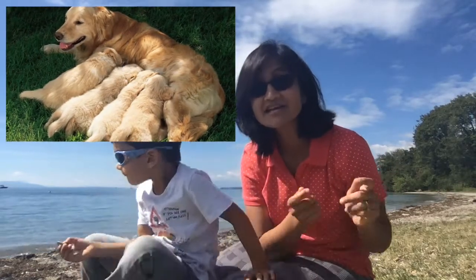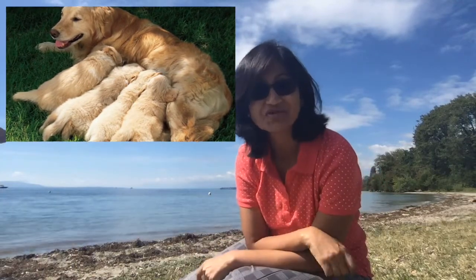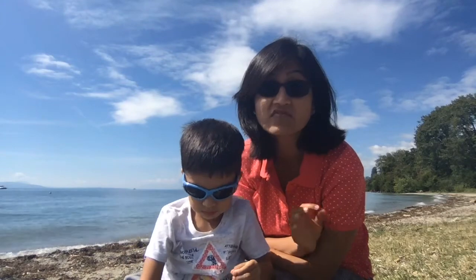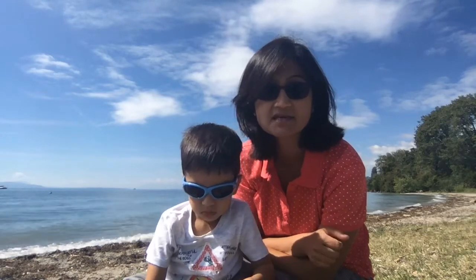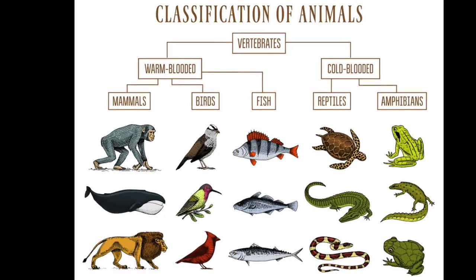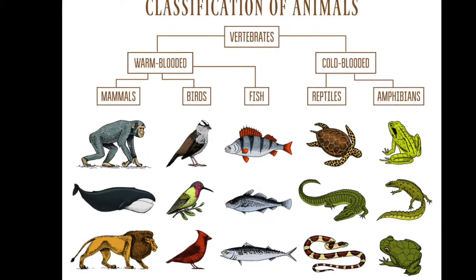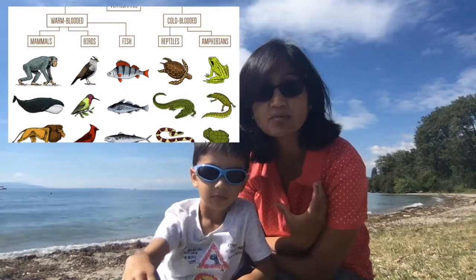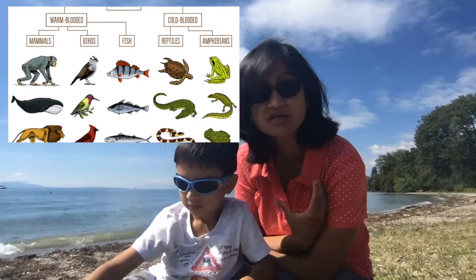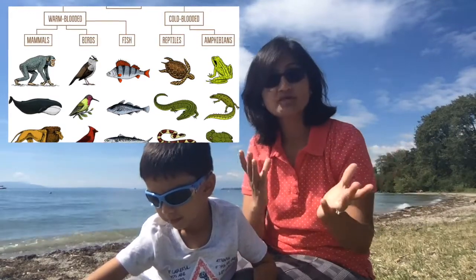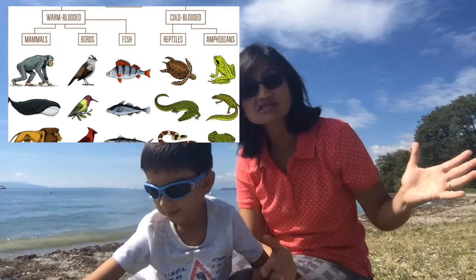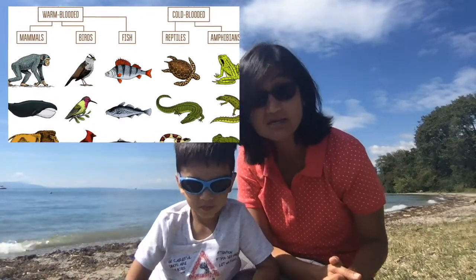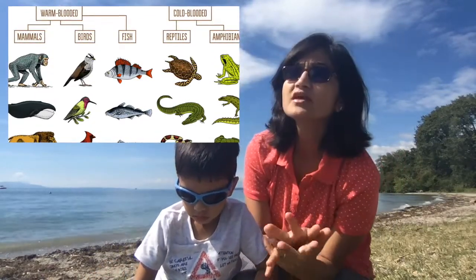All female mammals have glands that can produce milk for their little ones. Mammals have well-developed lungs and they are warm-blooded animals. By warm-blooded, we mean that they can maintain their body temperature even in cold temperatures.